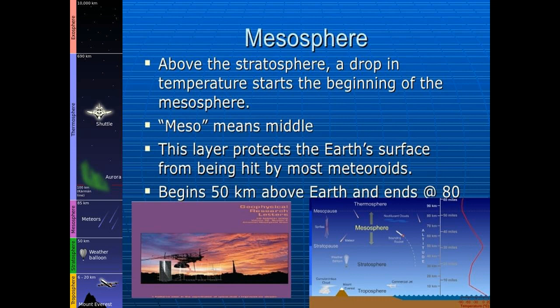The third layer of the atmosphere is the mesosphere, which extends from the top of the stratosphere up to a height of 80 km above the Earth. Here the temperature decreases with height until it reaches minus 100 degrees Celsius at the end of the mesosphere. The temperature decreases because the air is much thinner and there is little ozone. This layer has the lowest temperature in the atmosphere. Most meteors from space burn up in this layer. The mesopause separates it from the thermosphere.